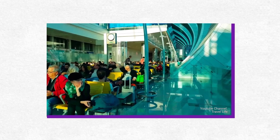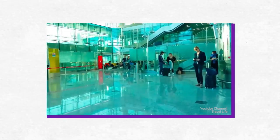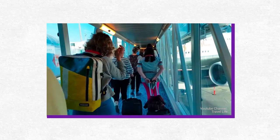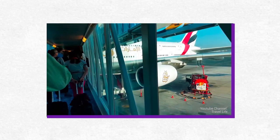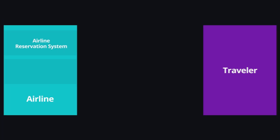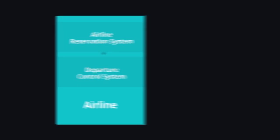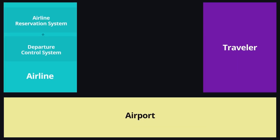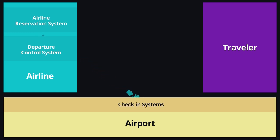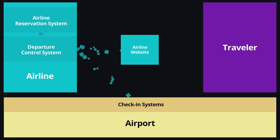Step 6: Departure. This element goes beyond the booking process, but it depends on the correct work of another crucial technology — the airline's Departure Control System, or DCS. The DCS is integrated with the airline reservation system, the airport's IT infrastructure, and all check-in touchpoints including self-check-in kiosks and the airline's mobile and web apps. It oversees passengers and their baggage from check-in to boarding.